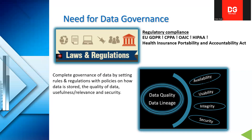Security is the final component. All four of these — availability, usability, integrity, and security — also come under data quality and data lineage, because data quality performs the same checks and lineage handles the tracing.